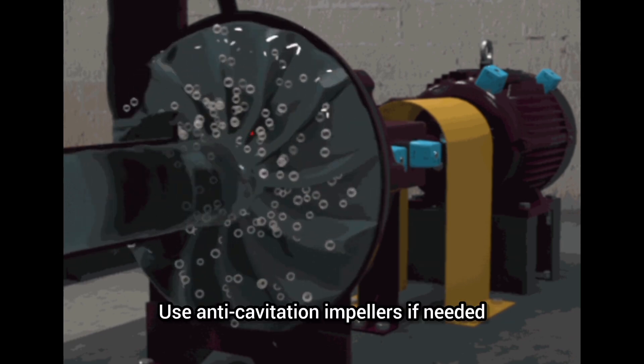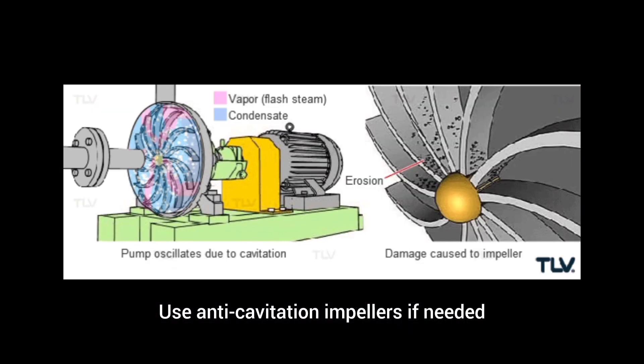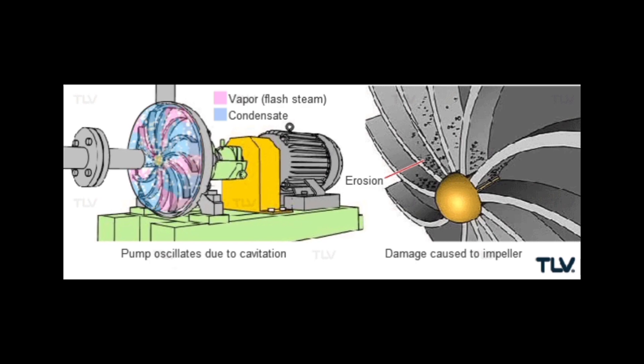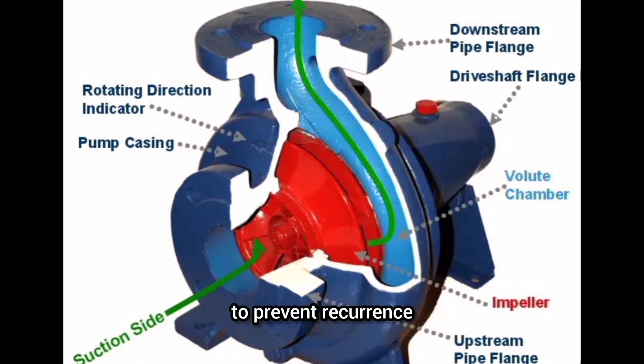Use anti-cavitation impellers if needed. For repair, replace damaged impellers or seals and address system design flaws to prevent recurrence.